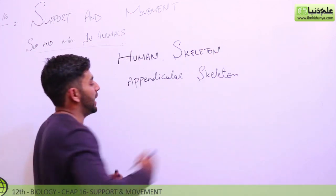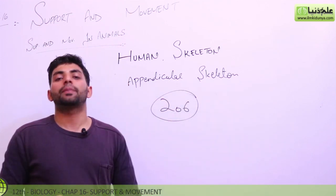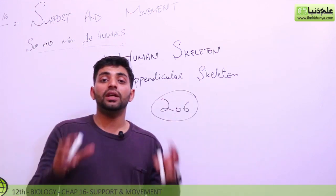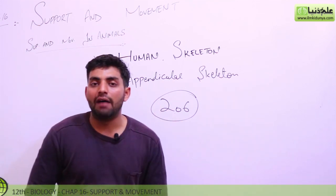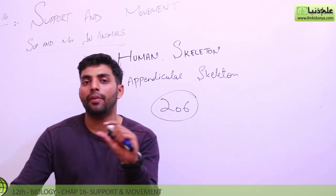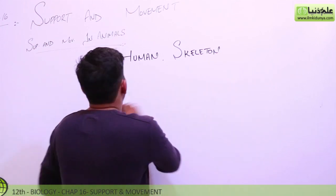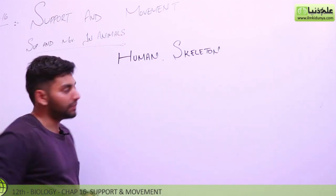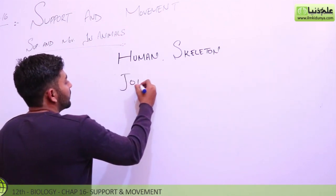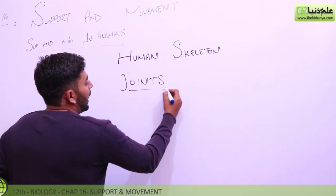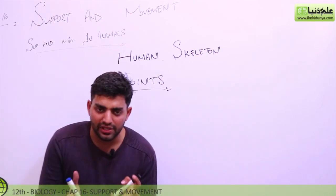The total sum of all bones is equal to 206 bones — this is your complete skeleton total. Now we will cover another topic, and that is joints. Ladies and gentlemen, joints — what are joints — you have to learn about them.